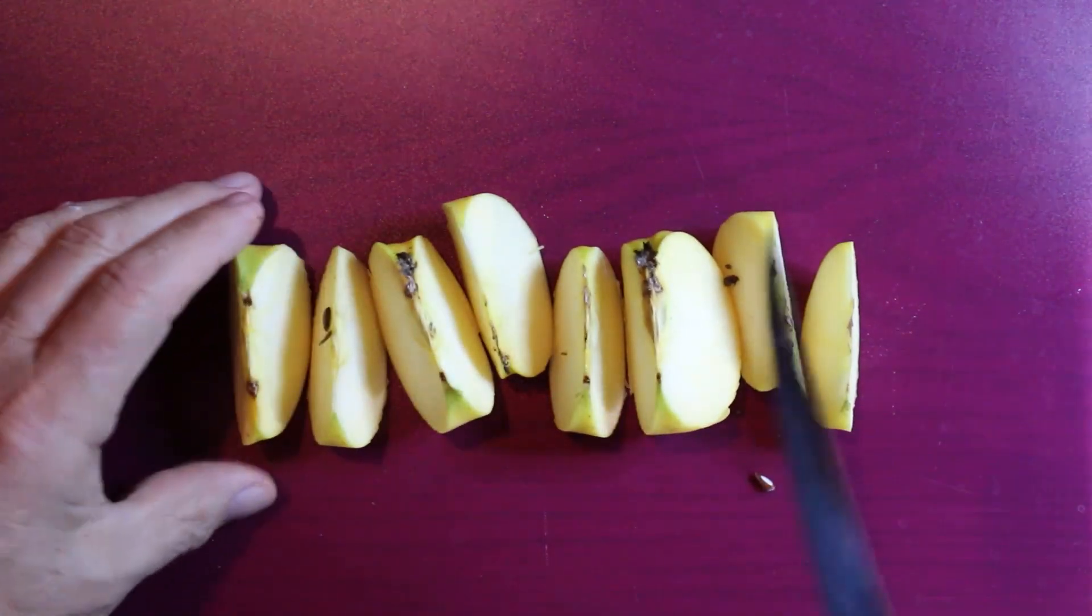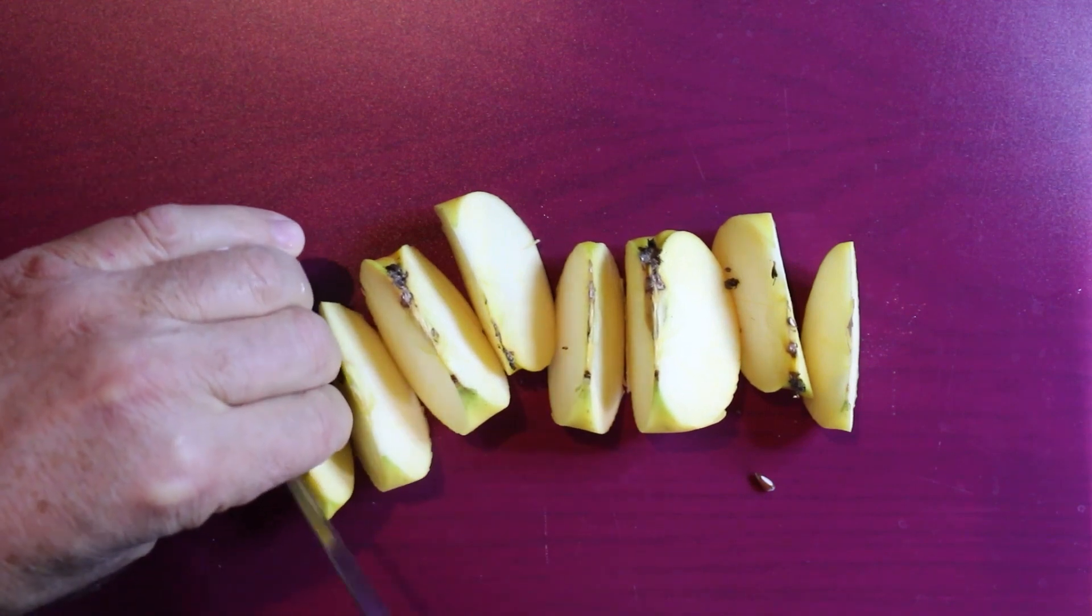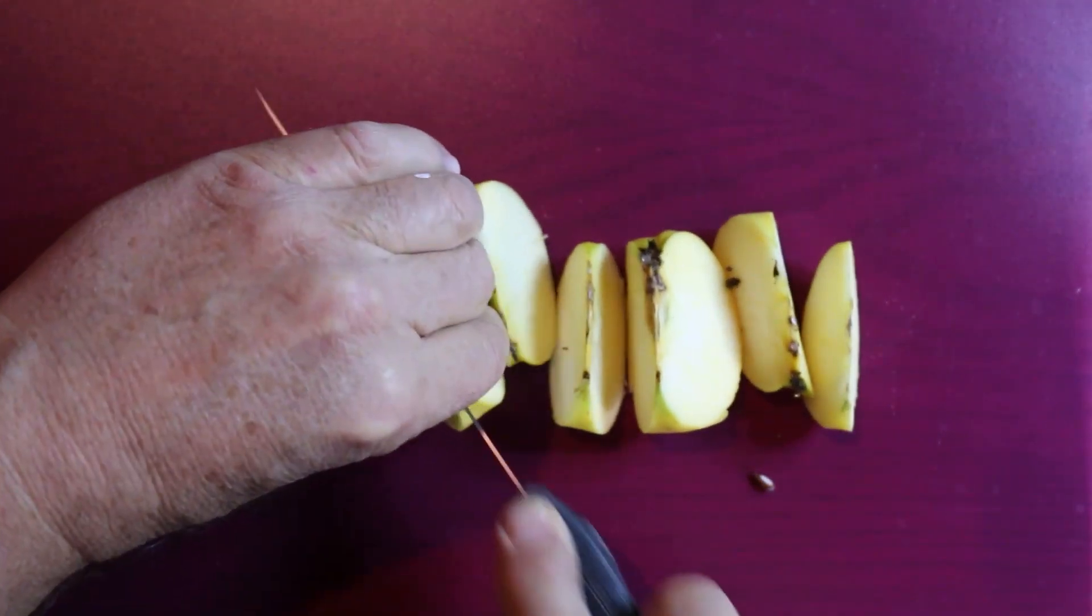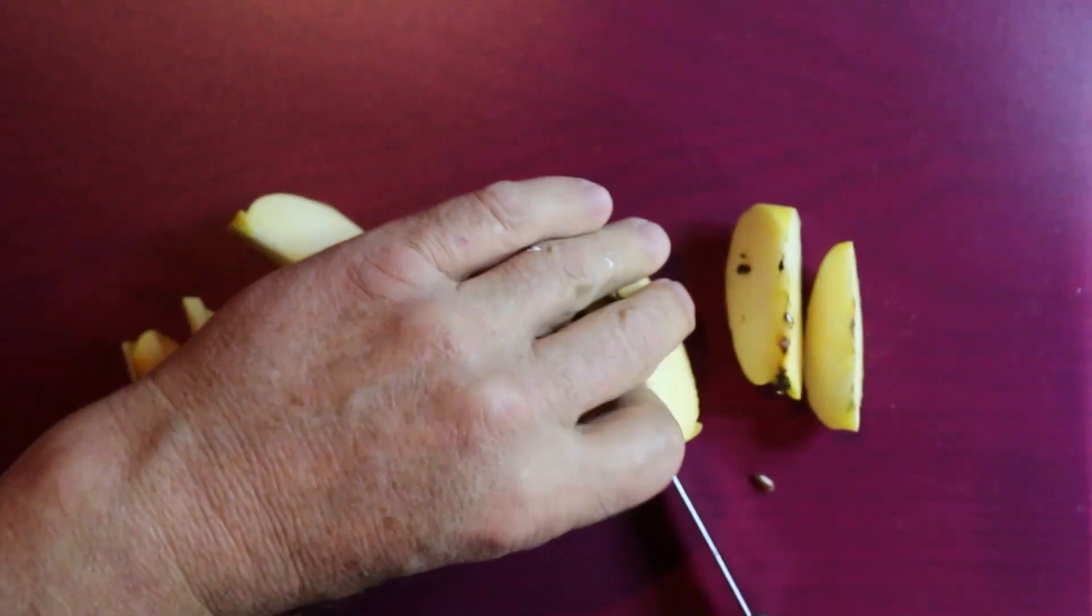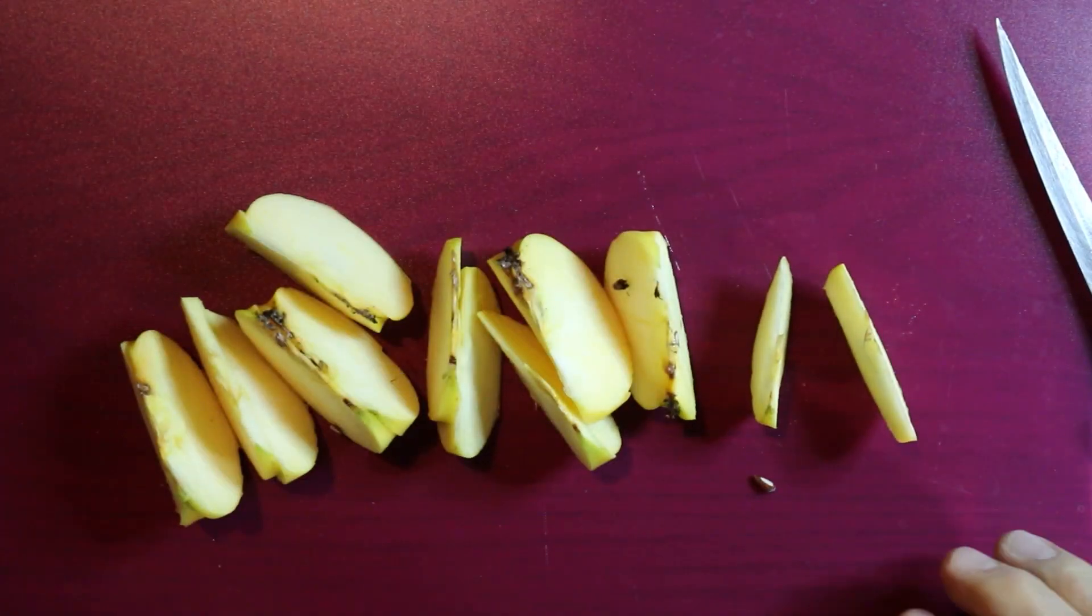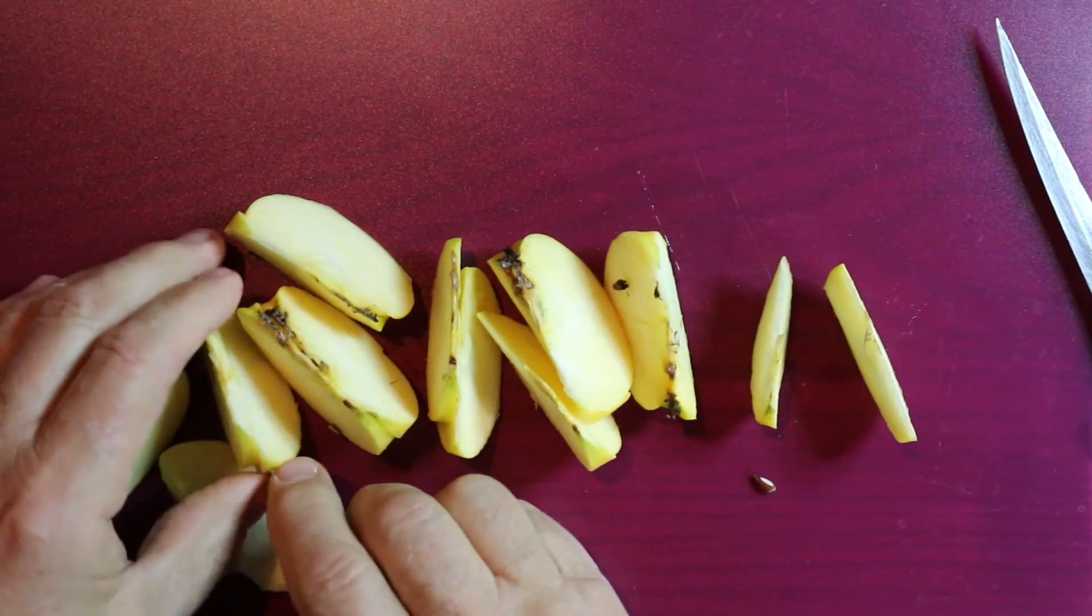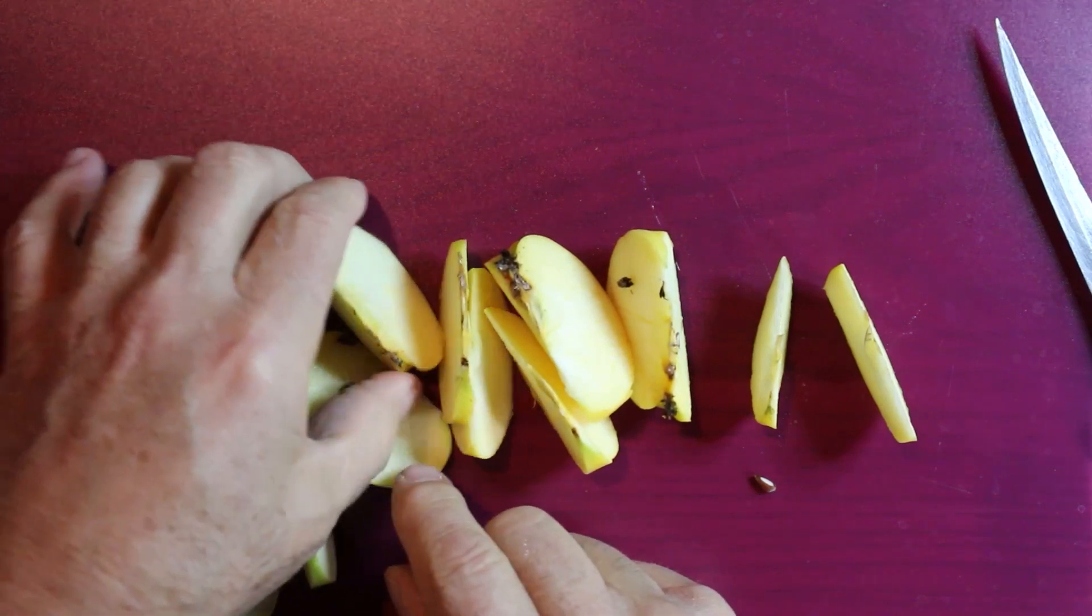Now, if we take each eighth and cut it in half, eight eighths. Now, in theory, we have 16 sixteenths.